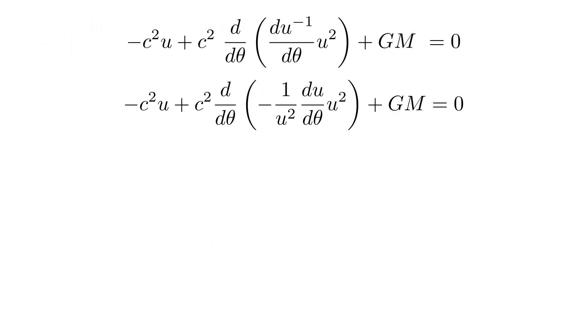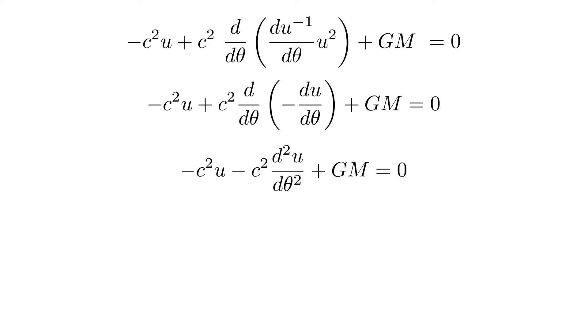the derivative of u inverse with respect to theta is just minus 1 over u squared d u d theta. The u squareds cancel out, and we can bring the minus sign out of the differential operator and simplify the notation as the second derivative.